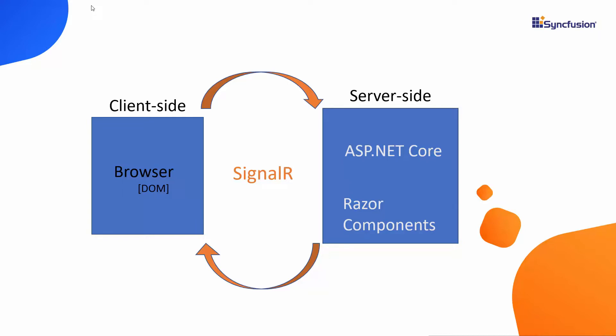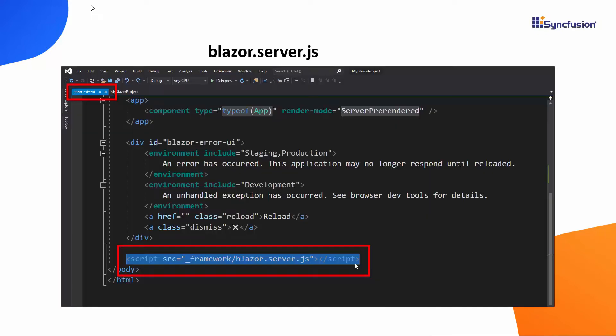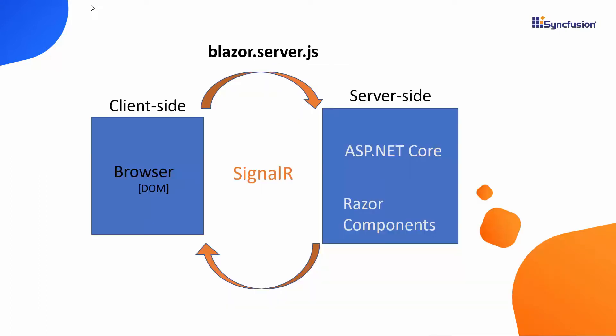To establish the SignalR connection, the Blazor server app uses a particular script file reference which is blazor.server.js. By using this reference, it will send any UI updates or event handling interactions between the client and the server.